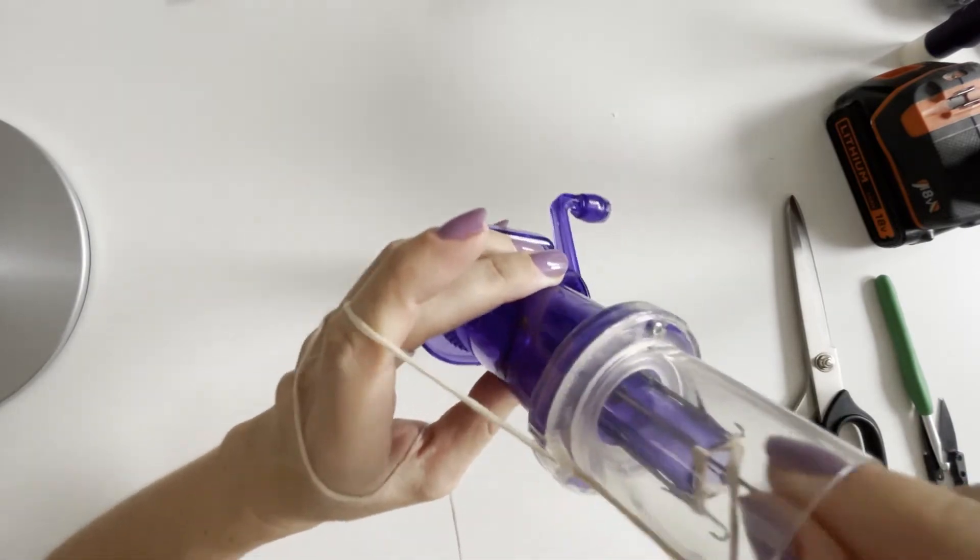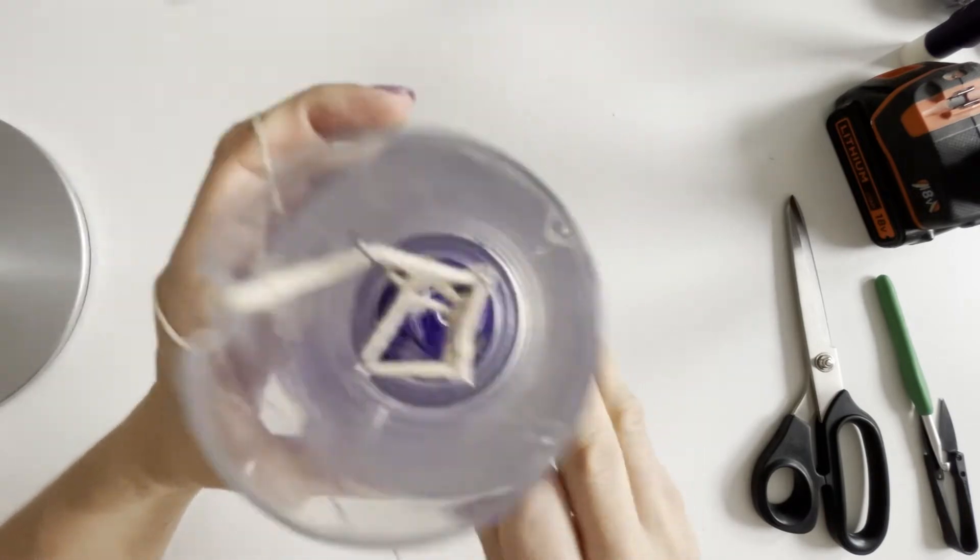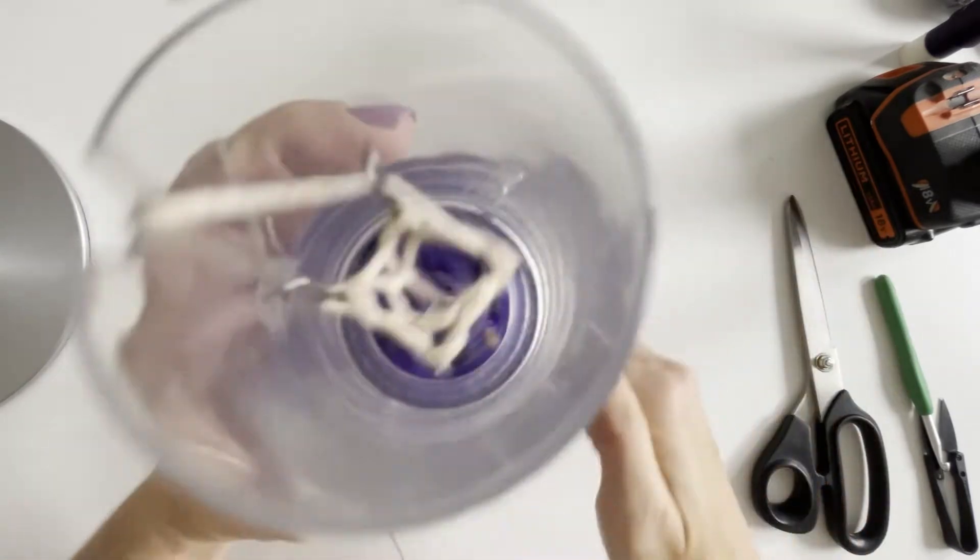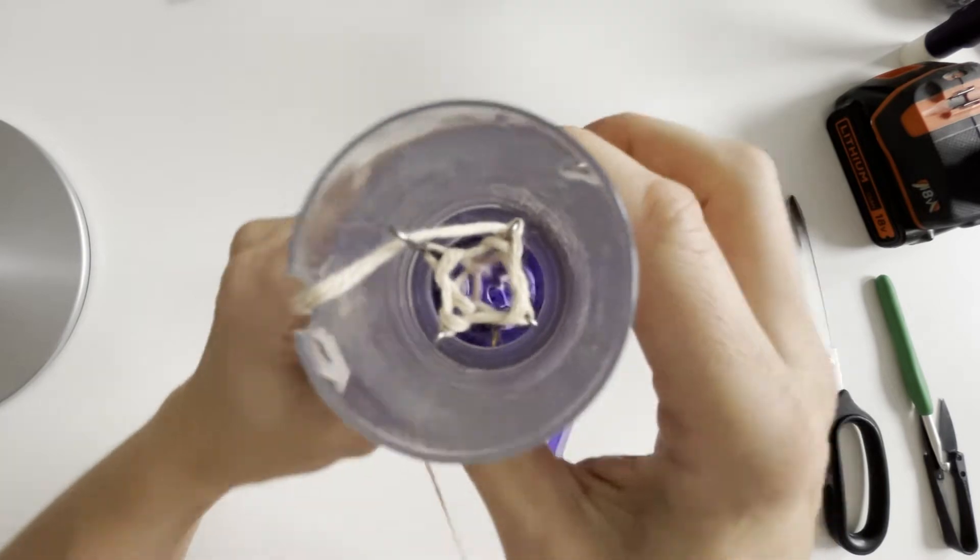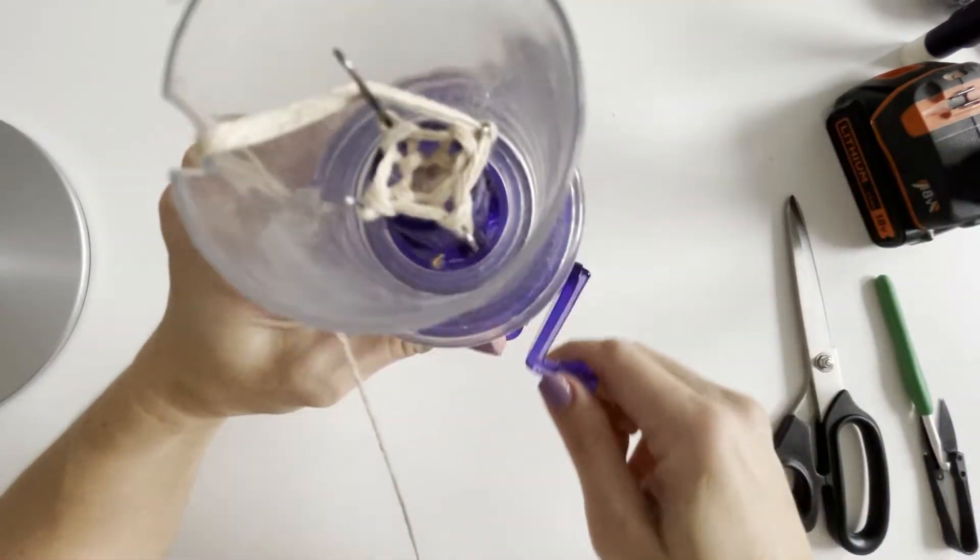Before you use the screwdriver, turn the handle between 10 to 20 times to make sure all stitches are knitted properly before we can turn on the fastener.